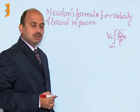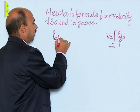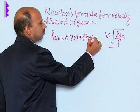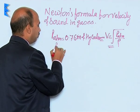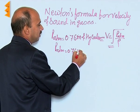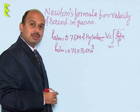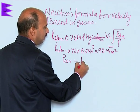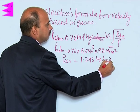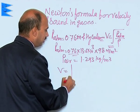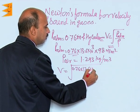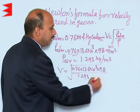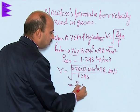We know this is the velocity according to Newton's formula for velocity in gases. Atmospheric pressure can be written as 0.76 meter of mercury column, so atmospheric pressure equals 0.76 × 13.6 × 10³ × 9.8 Newton per meter square. The density of air is 1.293 kg per meter cube. Putting all these values in, we get V = √(0.76 × 13.6 × 10³ × 9.8 / 1.293) ≈ 280 meter per second.